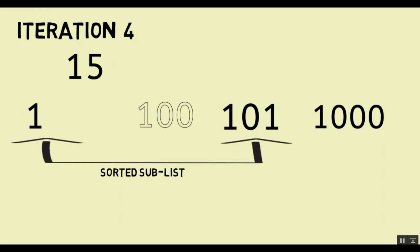Now imagine a scenario where a list is given in exact reverse order — that is, a list is in decreasing order and it has to be made into increasing order. Imagine how many shifts the last element causes. If there are 100 elements, the smallest element will be at the last and it will be picked up and set at the top position, and all the other 99 elements will be shifted.